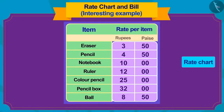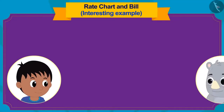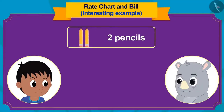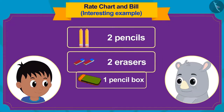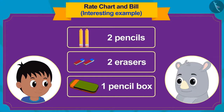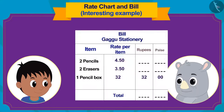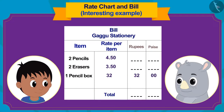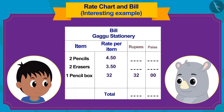Absolutely right! Rate chart! Raju purchased two pencils, two erasers, and one pencil box from Gaggu. Children, can you fill the empty spaces in this bill made by Gaggu?